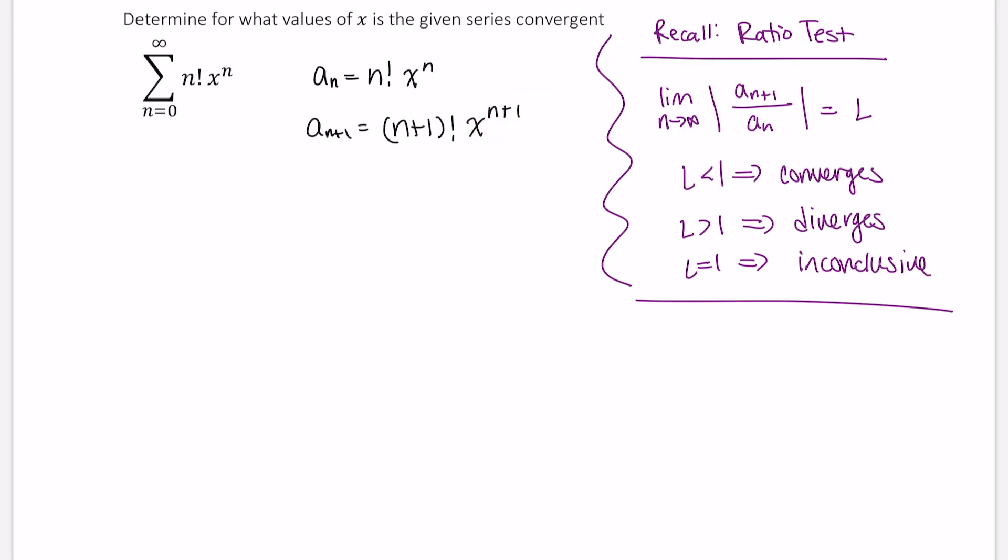Now let's go ahead and look at this limit. That is, the limit as n approaches infinity of the n+1 term divided by the nth term. This is (n+1) factorial times x to the n+1 divided by n factorial times x to the n power.